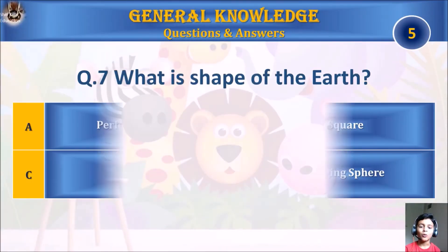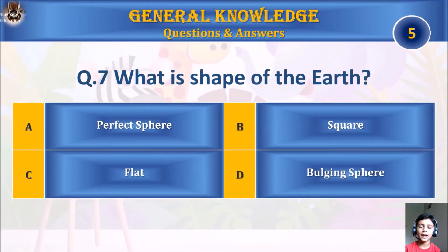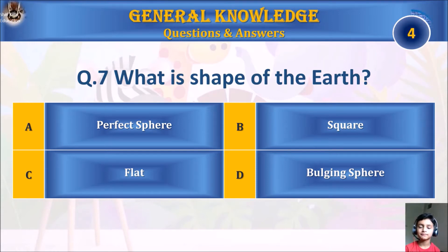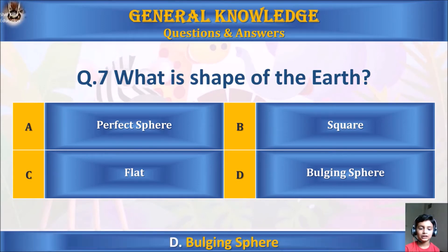Question 7: What is the shape of the Earth? A. Perfect Sphere, B. Square, C. Flat, or D. Oblate Sphere. Your time starts. The answer is D. Oblate Sphere.